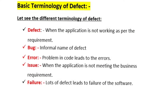The terminology for defect, issues, and bugs is basic information. Defect is when the application is not working as per the requirement. Bug is the informal name of defect. Error is when a problem in code leads to errors. Issue is when the application does not meet the business requirement. Failure is the defect that leads to the failure of the software.